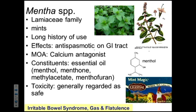Another plant you've probably all used is mint. Have you ever used mint when you have an upset stomach, gas, or flatulence? Mint tea is a long-standing herbal remedy for upset stomach, gas, and irritable bowel syndrome. It has antispasmodic activity on the GI tract. One of the major constituents is menthol — this terpenoid — as well as menthone, menthofuran, and many other compounds. This is generally recognized as safe. Fresh mint is better than dried, but the dried can be quite helpful too.